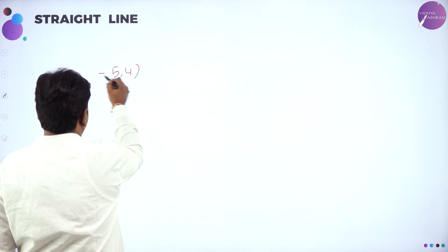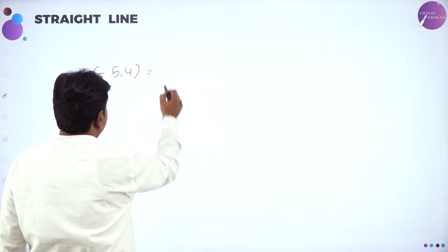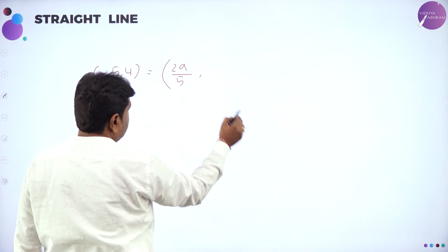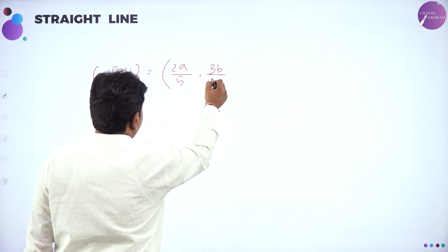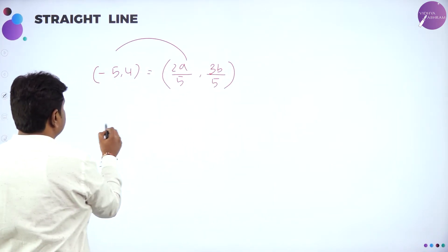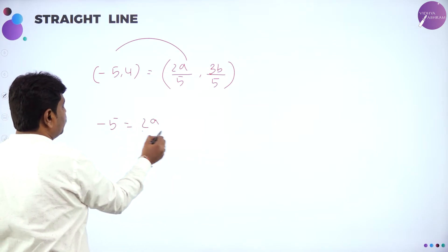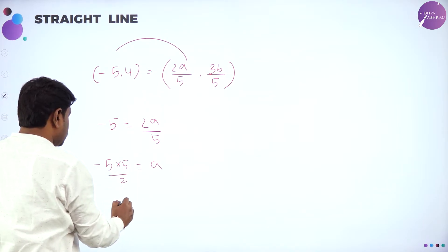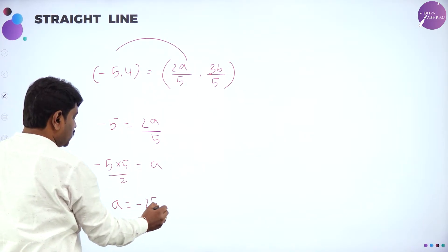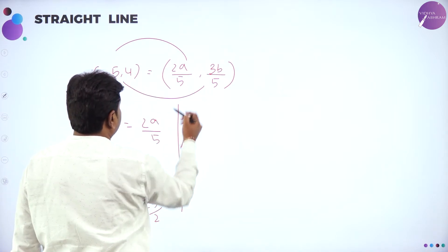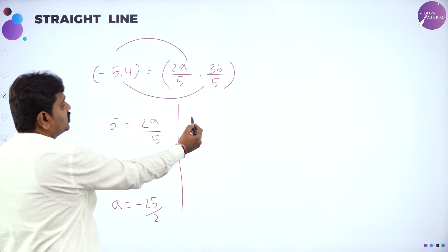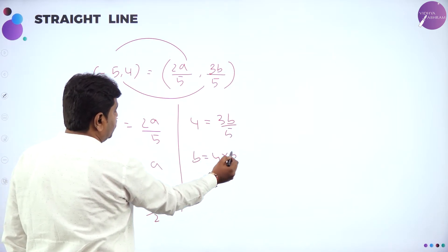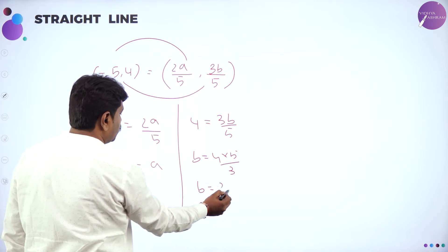So (-5, 4) equals (2A/5, 3B/5), since 2 plus 3 is 5. Equating first with first: minus 5 equals 2A divided by 5, so A equals minus 5 times 5 divided by 2, giving A equals minus 25 by 2. Now equate the Y-coordinate: 4 equals 3B divided by 5, so B equals 4 times 5 divided by 3, giving B equals 20 by 3.